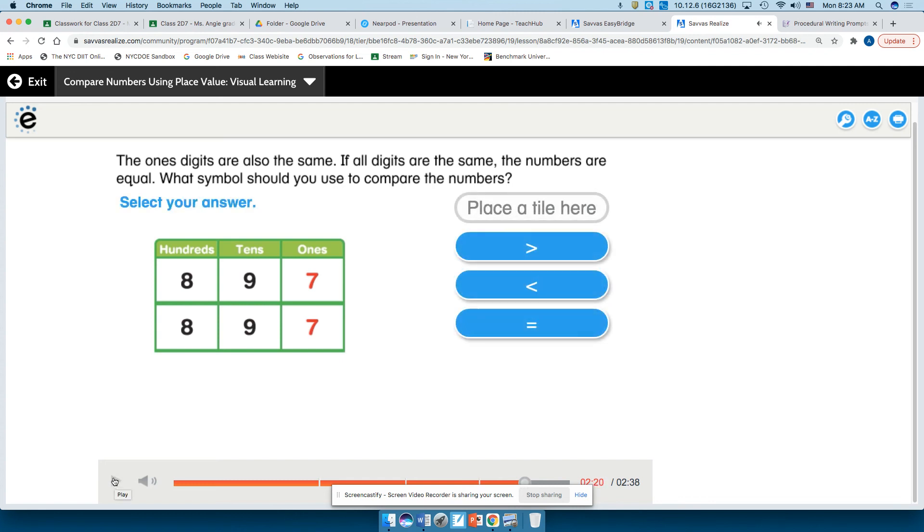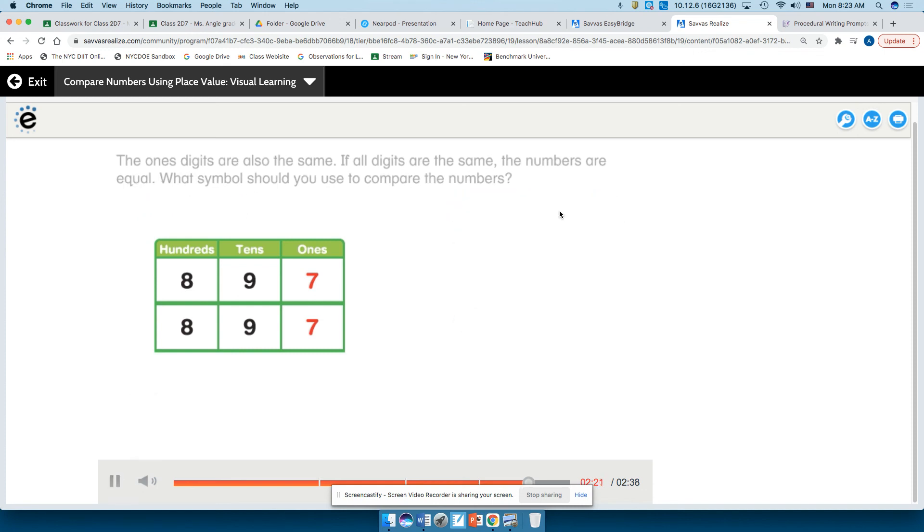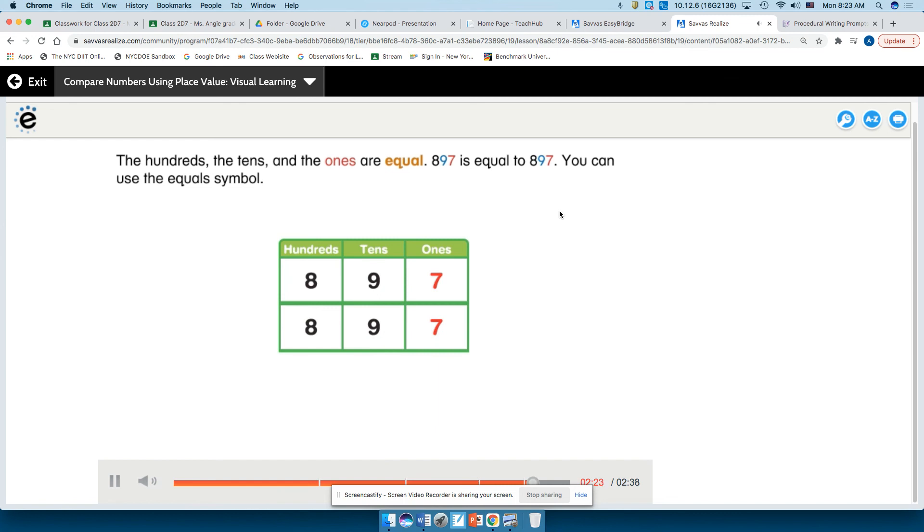What symbol should you use to compare the numbers? Select your answer. The hundreds, the tens, and the ones are equal. 897 is equal to 897. You can use the equals symbol.